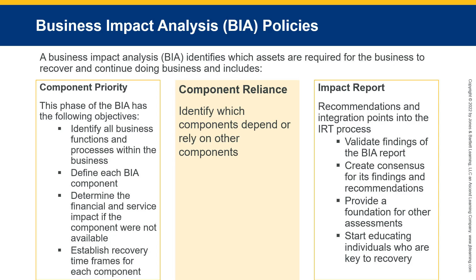A Business Impact Analysis (BIA) identifies which assets are required for the business to recover and continue doing business, and includes component priority. The BIA objectives are to identify all business functions and processes, define each BIA component, determine the financial and service impact if a component were unavailable, and establish recovery time frames. Component reliance identifies which components depend on other components. The impact report provides recommendations and integration points, validates BIA findings, creates consensus, provides a foundation for further assessments, and starts educating key individuals.